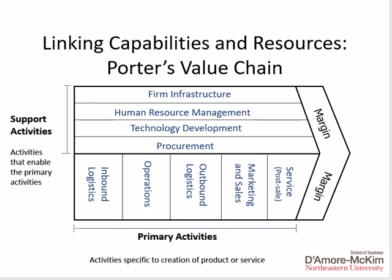One common way to think about capabilities is Porter's value chain. At the bottom are primary activities, which are specific to the creation of a product or service. Inbound logistics involves getting raw materials and inputs to the appropriate places for manufacturing. Operations involves the actual production of the good or service. Outbound logistics refers to getting finished goods to the right place, whether a warehouse, retail facility, or distributor. Marketing and sales represents the firm's activities to promote its brand and sell its product. And lastly, post-sale service represents service after the sale, such as warranty returns or problems with the product.